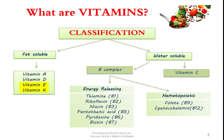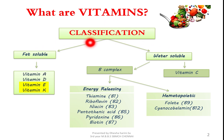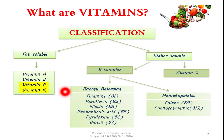Before going on to the topic, you should know what the term vitamin means. Vitamins are the organic compounds which are taken in the diet in small amounts. This vitamin is divided into fat soluble and water soluble vitamins. In the fat soluble vitamins, today we are going to see about vitamin E and vitamin K in detail in the upcoming slides.